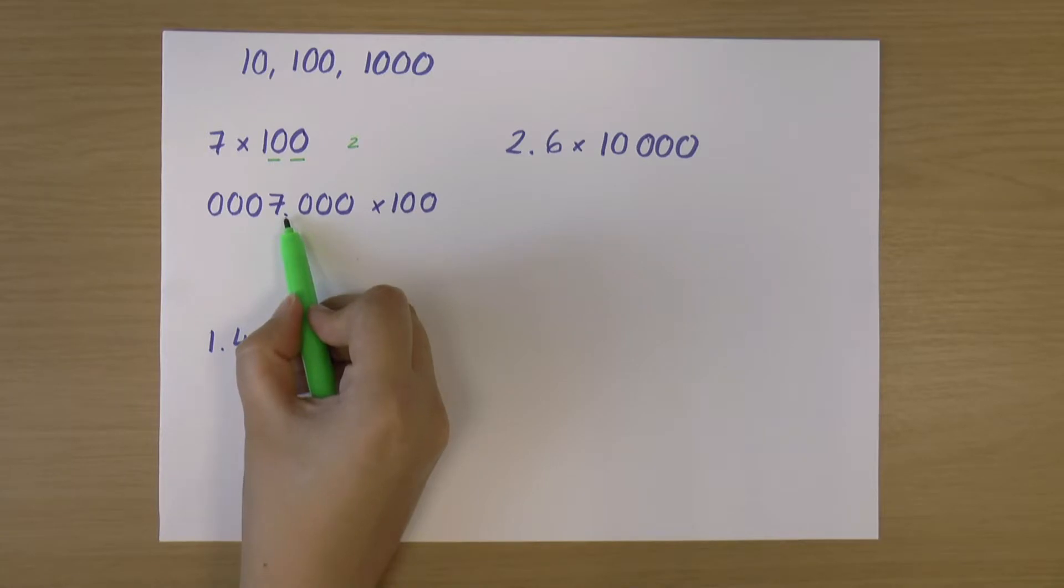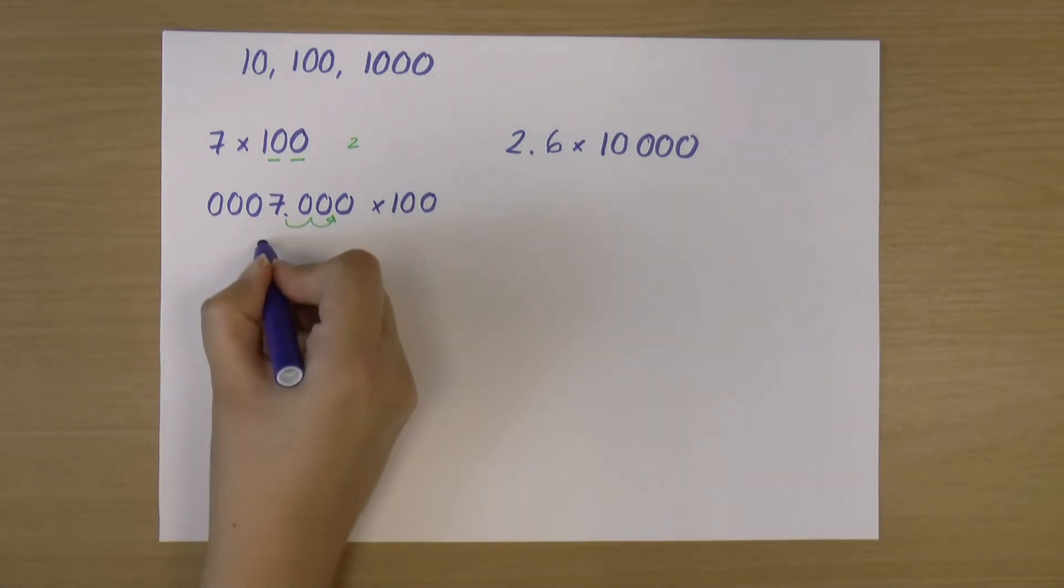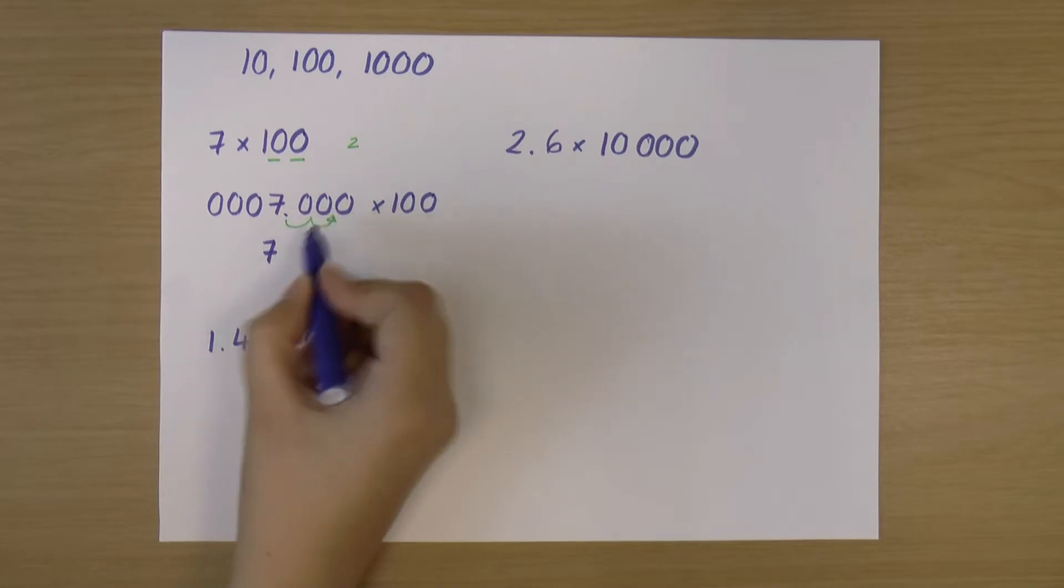I'm moving the decimal point however many 0s this number has. So my 100 has two 0s, so I'm moving my decimal point two places to the right, and it's going to the right because it's a multiplication by 100.